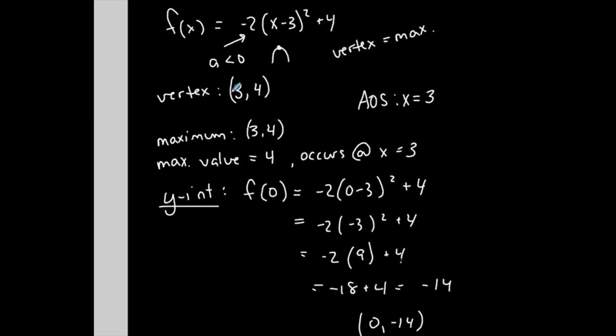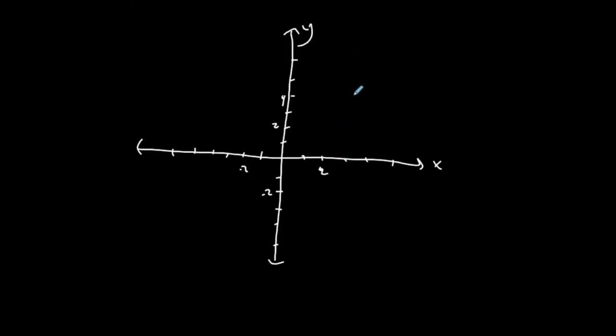Starting with my vertex, three, four, so let's start there, three, four is here. This is my vertex, I know it's a maximum. My axis of symmetry is a vertical line that goes through that vertex. It's a maximum.